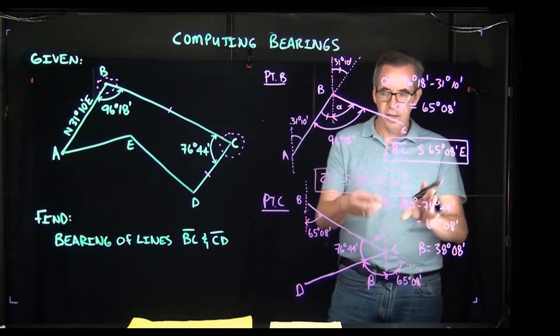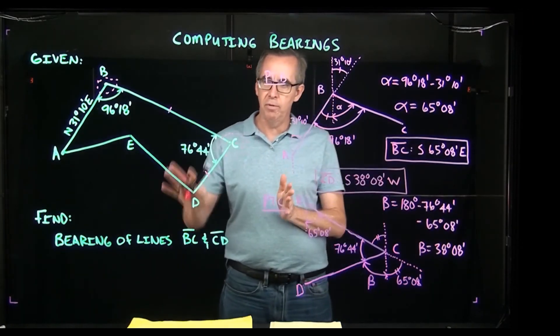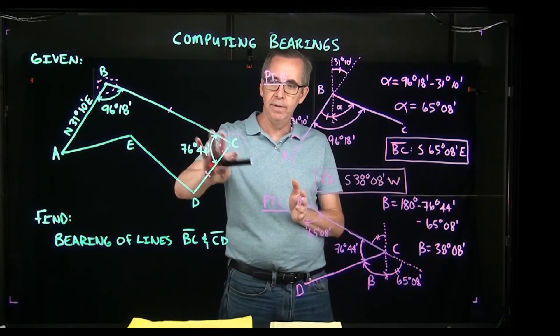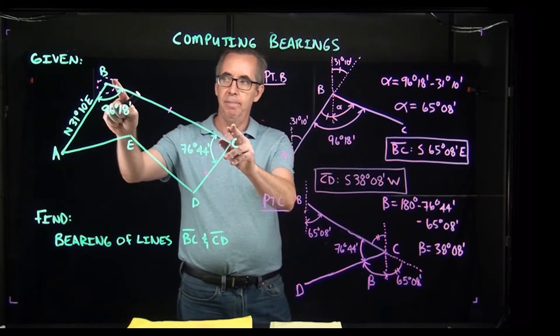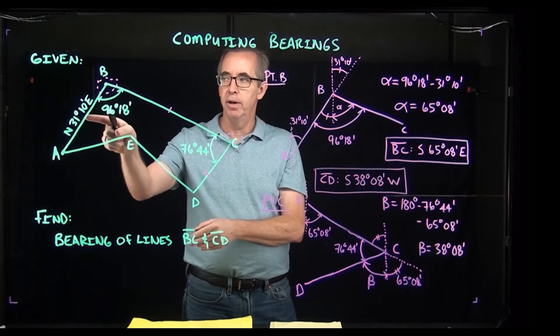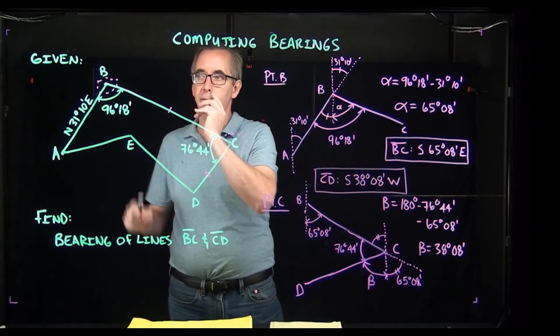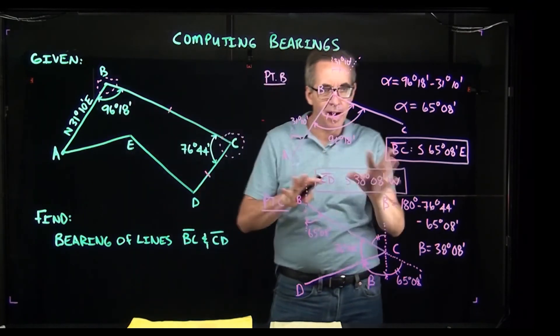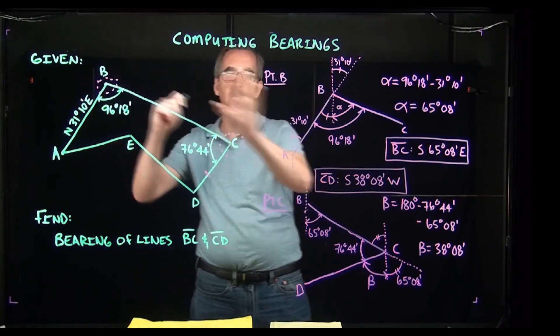And there are my two bearings. You can see I just had enough room for that. Again, to kind of recap, we had this closed traverse, we were trying to figure out the bearings for lines BC and CD. What we do is because we were looking for the bearing of BC and I know some things going on at point B, I know this angle, I know the bearing going into that, I basically did a detail. I did like almost like a free body diagram thing—it's not with forces but just basically a large detail of what's going on at point B.